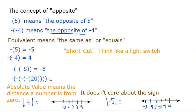This reads as the opposite of a negative 4. The opposite of a negative 4 is a positive 4, because the opposite of a negative is actually a positive. So the opposite of a negative 4 is the same as a positive 4. An equal sign is also an equivalent symbol — it also means the same as.